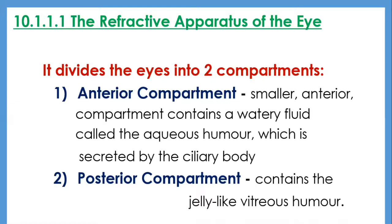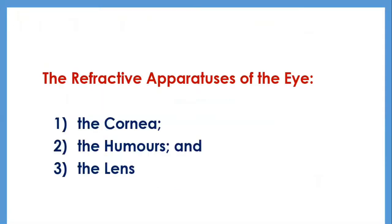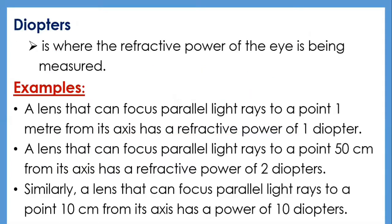The anterior compartment contains a watery fluid called the aqueous humor, secreted by the ciliary body. The posterior compartment contains the jelly-like vitreous humor. The humors help maintain the structural integrity of the eyeball and lens and supply the lens with nutrients. The surface of the eye is covered by a transparent membrane called the conjunctiva, which supplies the cornea with nutrients. The refractive apparatuses of the eye are the cornea, the humors, and the lens. Refractive power is measured in diopters.